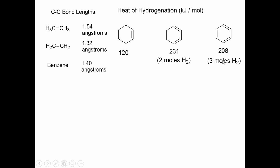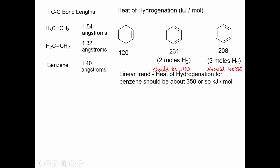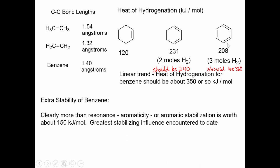If we just take a linear thing here, we're going to say that this should be 240, this should be 360 if we use 120 as our base value. Again, conjugation stabilizes it a little, but this benzene ring arrangement right here stabilizes it an awful lot.